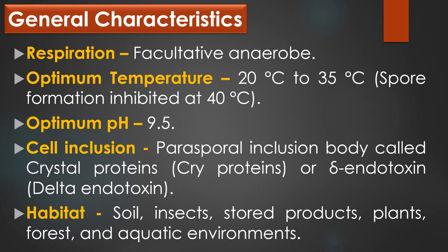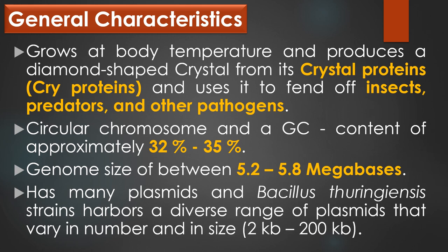Bacillus thuringiensis grows at body temperature and produces a diamond-shaped crystal protein, also called as cry proteins, and uses it to fend off insects, predators and other pathogens. Bacillus thuringiensis has a circular chromosome and a GC content of approximately 32 to 35%. It has a genome size of between 5.2 to 5.8 megabases. It has many plasmids that vary in number and in size from 2 kb to 200 kb.